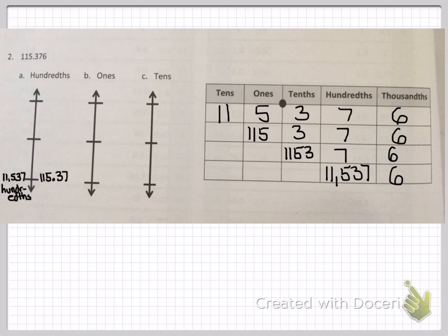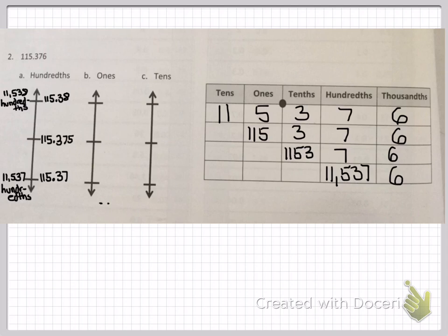First, they want us to round to the nearest hundredth. I've pulled the hundredths from the place value chart and put it at the bottom of the number line: one thousand five hundred and thirty-seven hundredths, which is the same as one hundred and fifteen point three seven. At the top, I'm putting eleven thousand five hundred and thirty-eight hundredths, which is the same as one hundred and fifteen point three eight. The midpoint is one hundred and fifteen and three hundred and seventy-five thousandths. The number fits right above our midpoint, one hundred and fifteen point three seven six. So we're rounding up — the closest hundredth is one hundred and fifteen and thirty-eight hundredths.